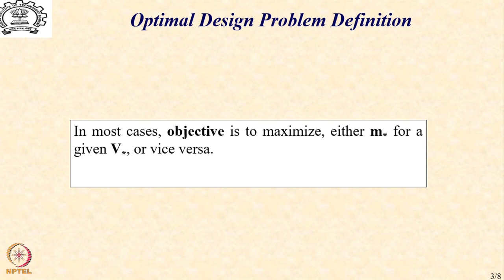Now, we have already mentioned that we would either like to maximize the velocity for a given payload mass or maximize the payload mass for a given velocity. These are going to be our formal design objectives for designing a multi-stage rocket.